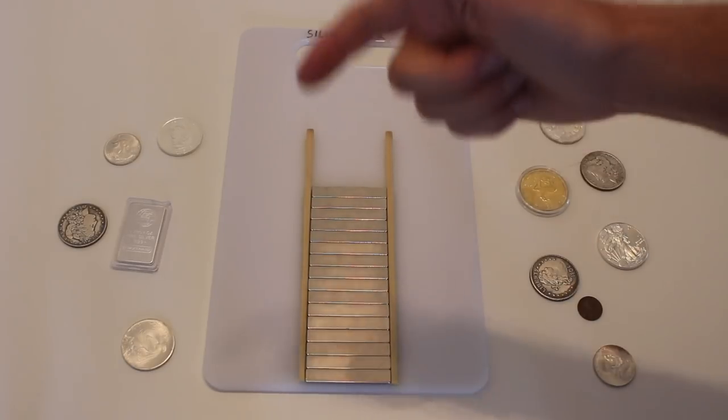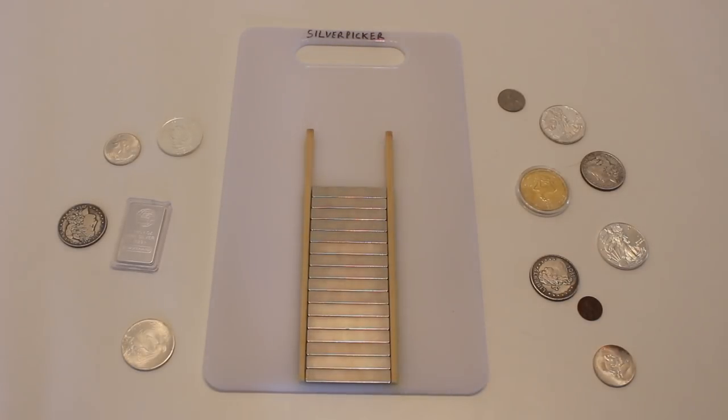We're going to be able to test coins, rounds, bars, and anything else that you suspect to be a precious metal like gold or silver.